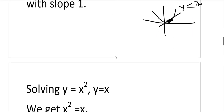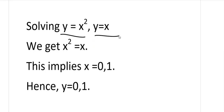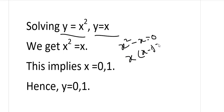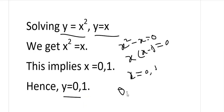First we will solve these two equations: y = x² and y = x. Since both left-hand sides are equal, the right-hand sides are equal, giving x² = x, or x² − x = 0, so x(x − 1) = 0. Therefore x = 0 and x = 1. Putting x = 0 gives y = 0, and x = 1 gives y = 1. So the points of intersection are (0, 0) and (1, 1).